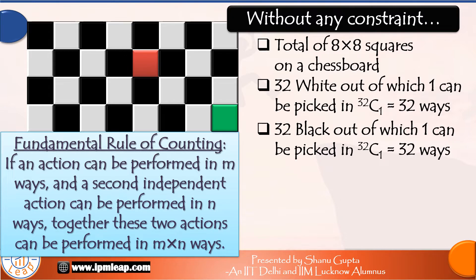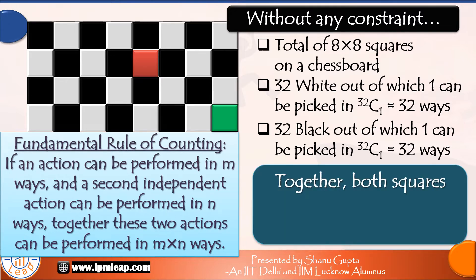So if the white square could be picked in 32 ways and then the black square can again be picked in 32 ways, together these two squares can be picked in 32 into 32 ways, which is equal to 1024 ways. So that was a quick recap of the fundamental rule.